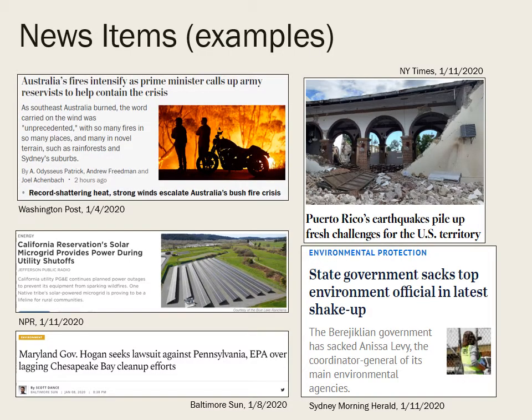Your news items are going to be articles related to our course topics, posted to a dedicated discussion board. When I looked for news items on January 4th, pretty much every newspaper worldwide was covering the Australian wildfires on the front page — and that is both environmental law and disaster law. Our class will focus on U.S. laws and regulations, but it's important for local, state, and federal officials to learn from events in other countries. And of course the U.S. does send help to Australia and other nations around the world.